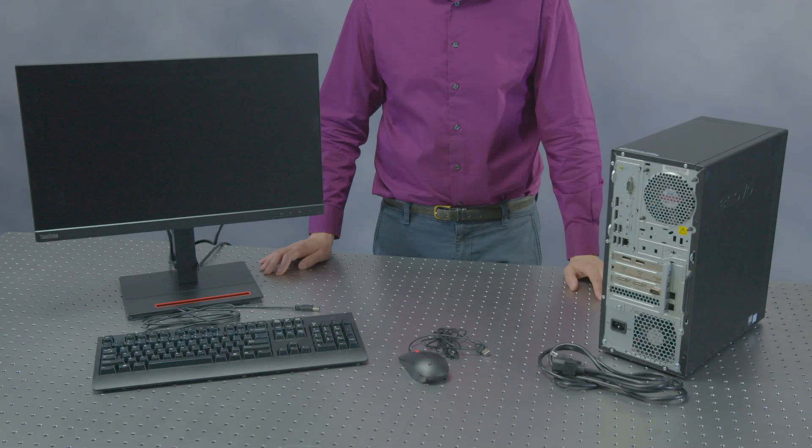Open the box labeled PC system and carefully remove the components. Set up the computer, monitor, mouse, and keyboard. Imaging software comes pre-installed on the PC.